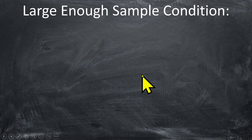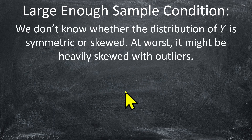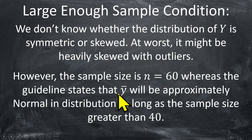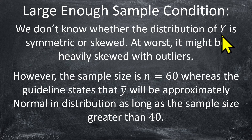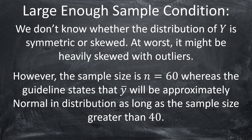The second condition is that we need to know our sample size is large enough. We don't know whether the distribution of individual measurements is symmetric or skewed — at the very worst, it could be heavily skewed. But the conditions for the central limit theorem state that even if the underlying distribution is heavily skewed, as long as the sample size is 40 or more, we're okay. We can use the central limit theorem and assume our sample mean follows a normal distribution. Here our sample size is 60, so that's definitely big enough.